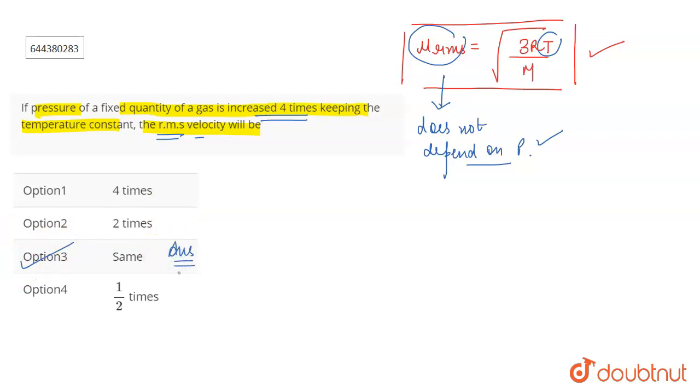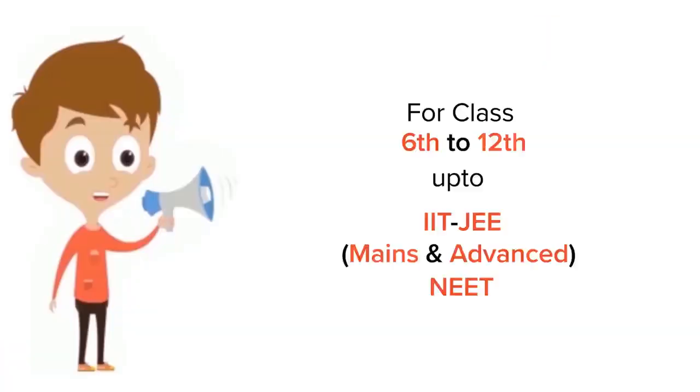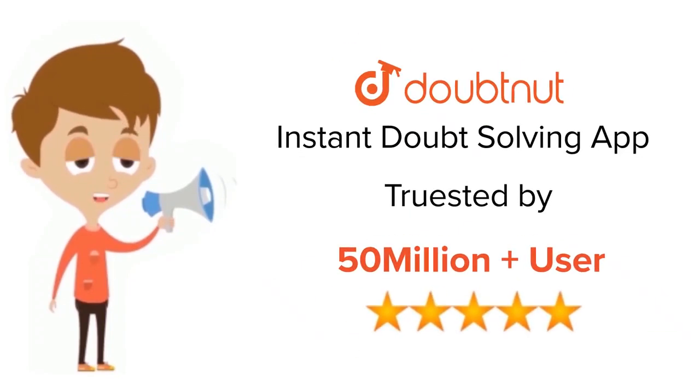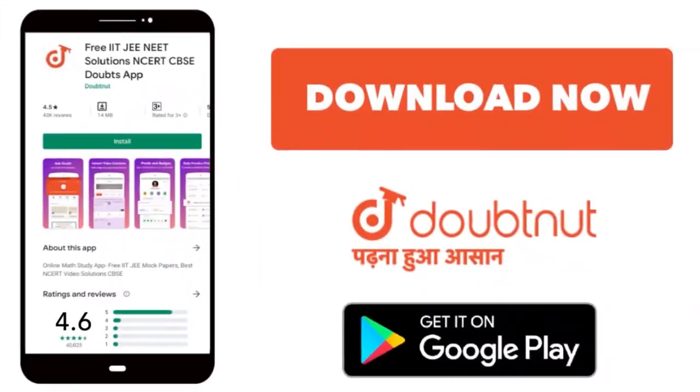That is, it is going to remain the same because pressure does not bother the rms velocity. It does not depend on that. Therefore, the correct answer is option three. That's all for the question. For class six to twelfth, IIT-JEE and NEET level, trusted by more than five crore students, download Doubtnet app today.